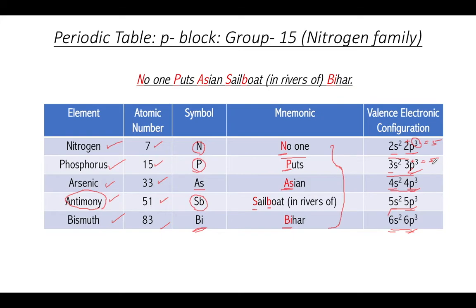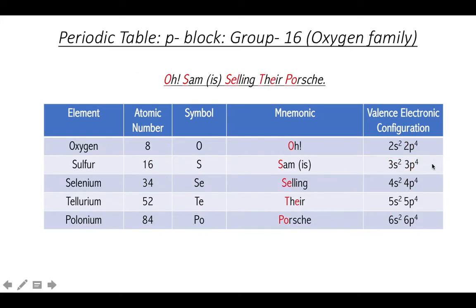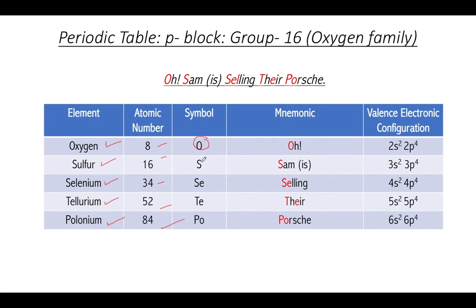Moving to Group 16, the oxygen family. This family has five elements: oxygen, sulfur, selenium, tellurium, and polonium, with atomic numbers 8, 16, 34, 52, and 84. Their symbolic representations: oxygen is O, sulfur is S, selenium is Se, tellurium is Te, and polonium is Po.